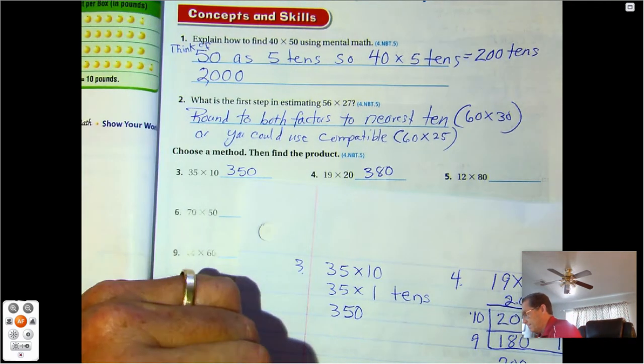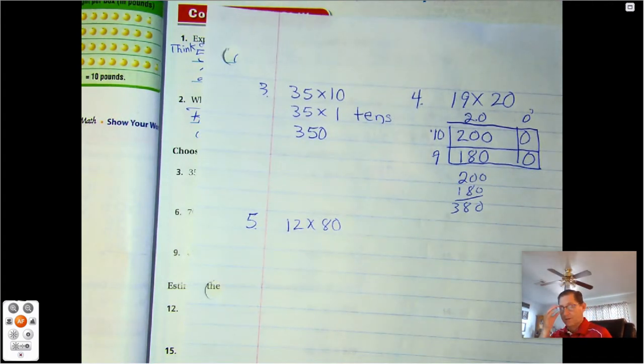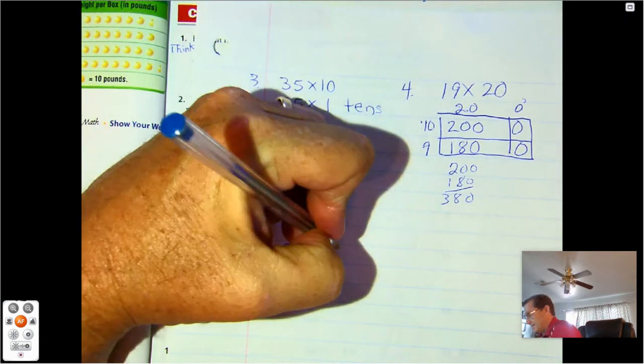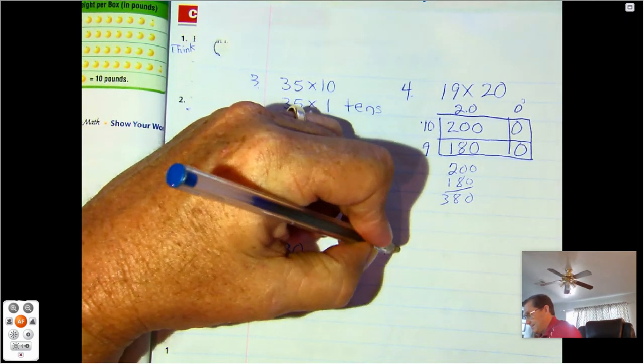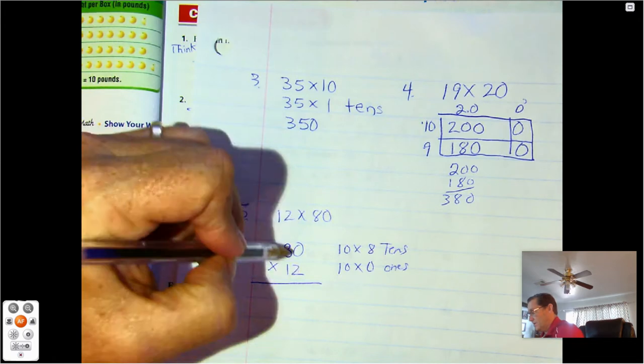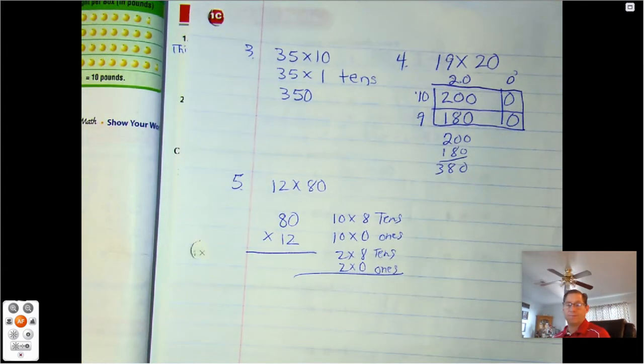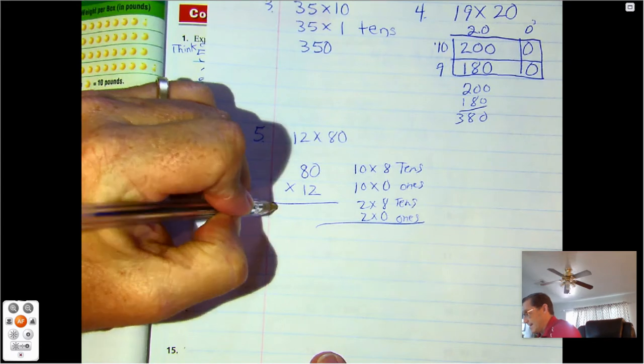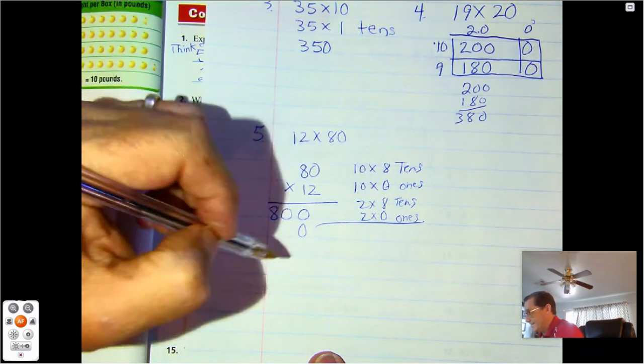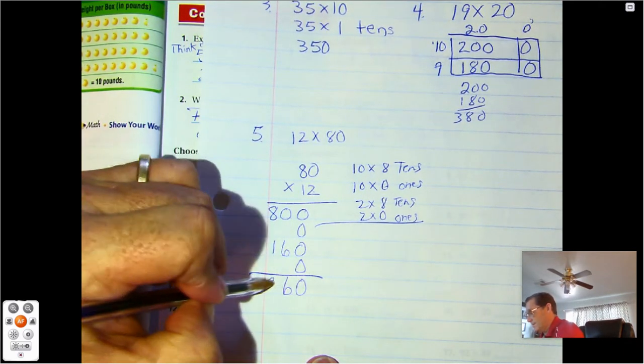Number five. 12 times 80. I could think of this as 10 times 8 tens, 10 times 0 ones, 2 times 8 tens, and 2 times 0 ones. So 10 times 8 tens is 80 tens or 800. 10 sets of 0 is 0. 2 sets of 8 tens is 16 tens or 160. 2 sets of 0 ones is 0. And then we'd add that together. So 960.